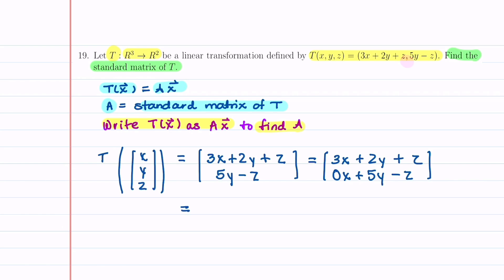And then now we can exactly see what our matrix A is. It's going to be 3, 2, 1, 0, 5 minus 1. And this is going to multiply our vector XYZ.